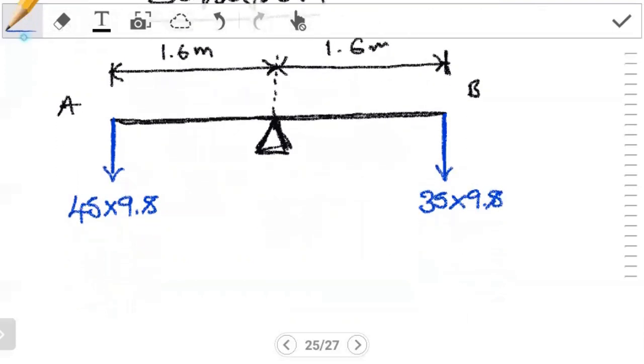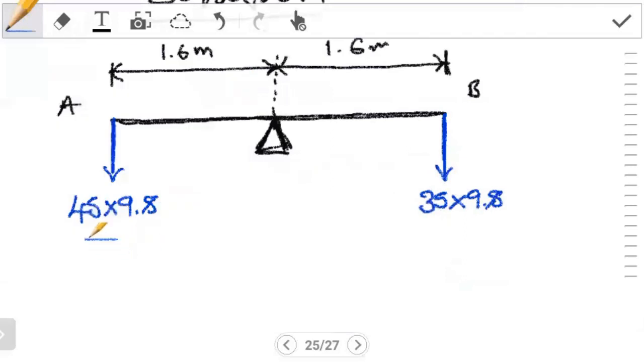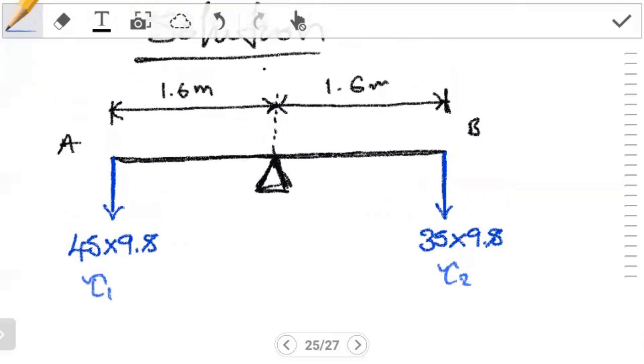You can try to see if the system is in equilibrium with just these two people. Work out what torque one is. Work out what torque two is. See if when you add them you get zero. If when you add you don't get zero, then we're saying the system is not in equilibrium. So what we need then is the third person to sit so that the system now becomes in equilibrium.